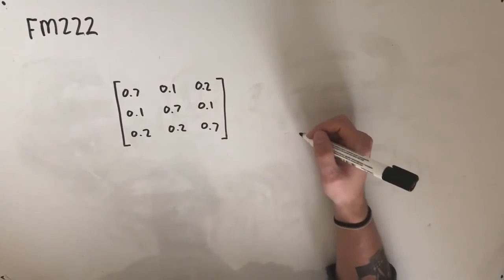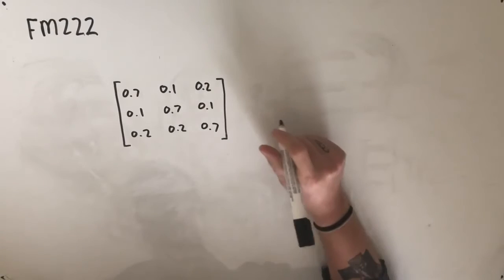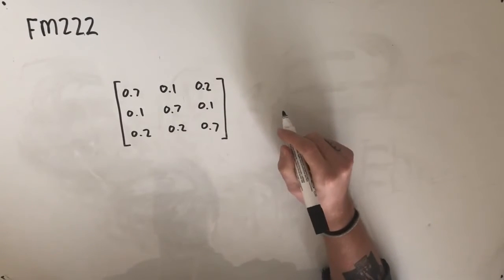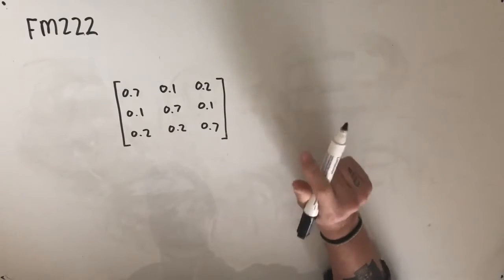Hey guys, welcome to question FM222. This question reads, a cafe sells three types of breakfasts: English, omelette and pancakes, each represented by E, O and P.